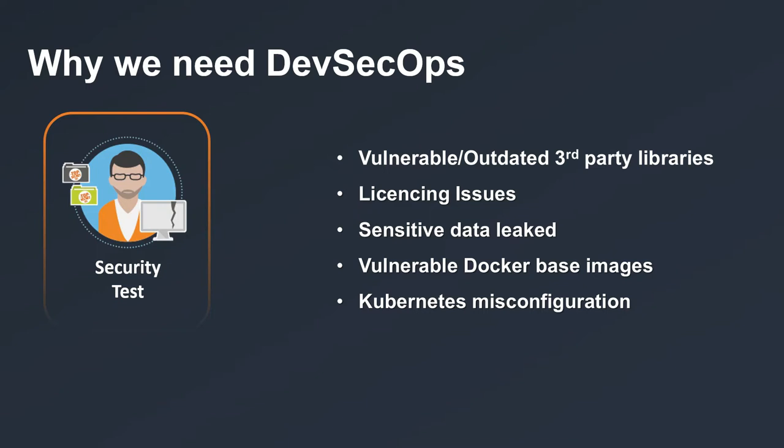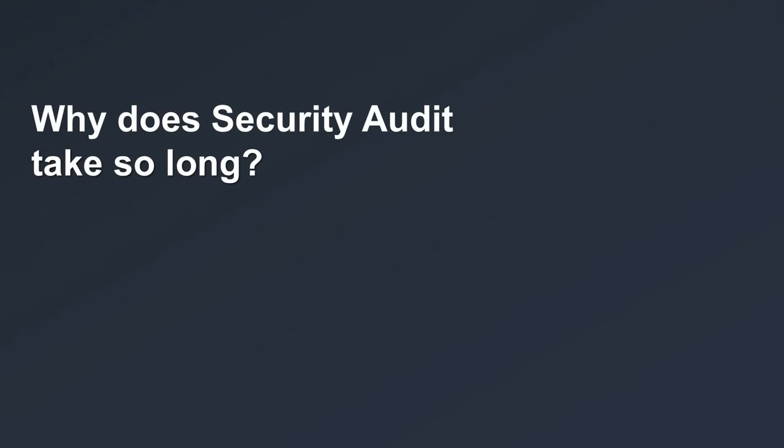In the meantime, because of the efficient DevOps cycle, a couple of new versions have been created, all waiting in the queue for the security audit. You have this super optimized DevOps process that you built and are proud of, but right before the release, the security checks and audit block the whole process, delaying the release by weeks.